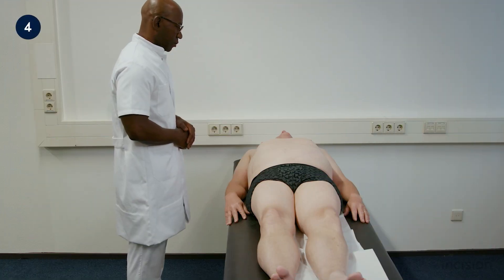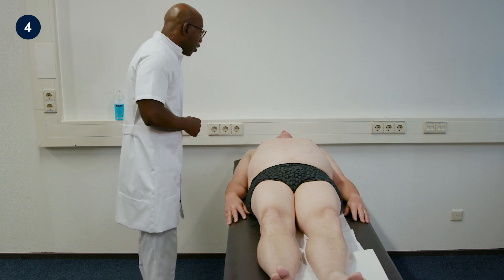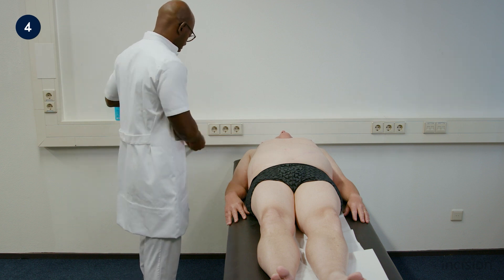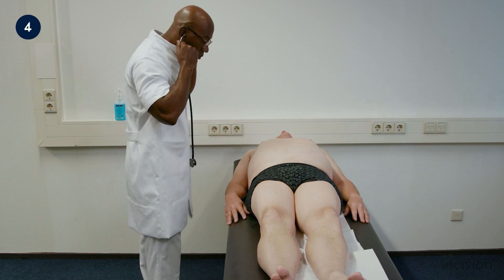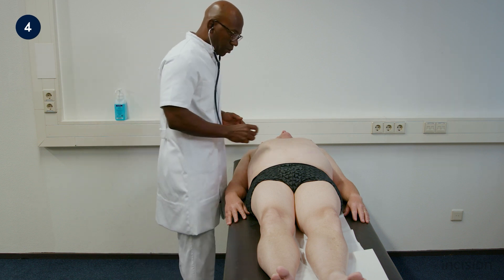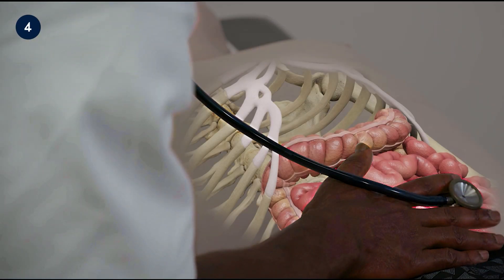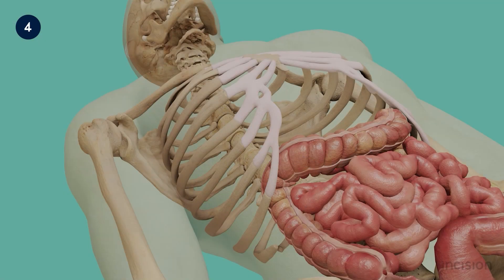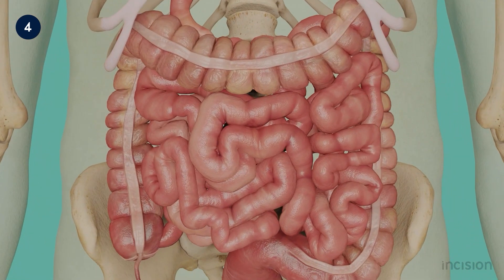Auscultation of the abdomen is next performed, listening with the diaphragm of the stethoscope at at least two positions for the intermittent, gurgling sounds of normal bowel movement. Peristaltic sounds typically occur episodically at roughly five to ten second intervals, but the examiner should listen for a full two minutes before concluding that bowel sounds are reduced or absent.